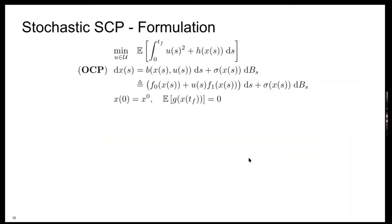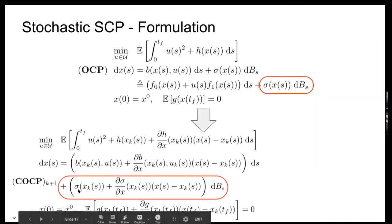We are now ready to switch to the stochastic formulation. The idea is: knowing that for the deterministic setting we have these nice results, is there a way to adopt those results to the stochastic case? The answer is yes. I recall the original stochastic optimal control problem. SCP applies in the same way by considering that now we are adding also a diffusion term that might be nonlinear, so we might consider linearization around the previous trajectory for this additional quantity. We also consider trust region constraints in expectation, since trajectories are stochastic processes.